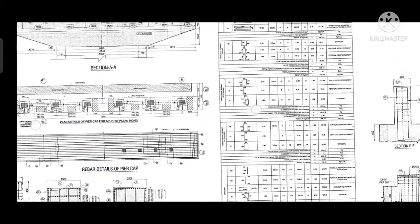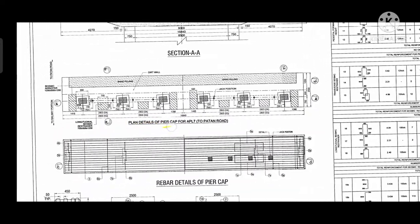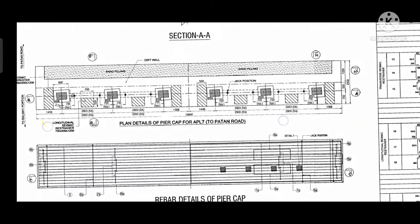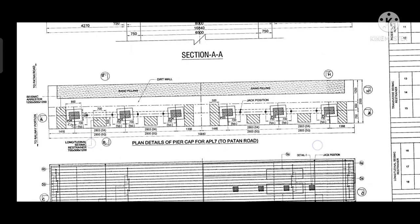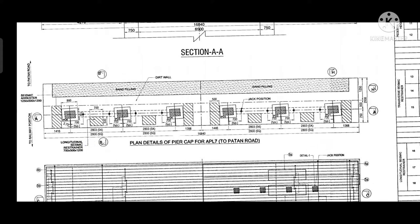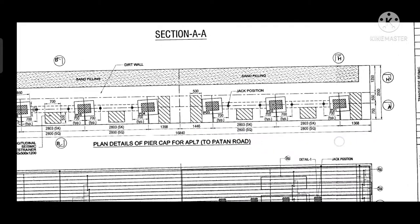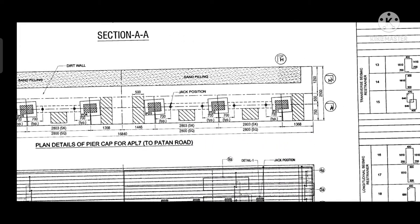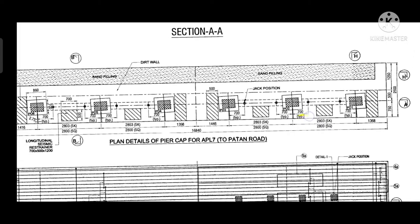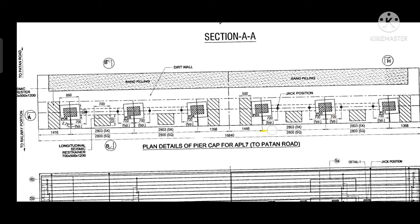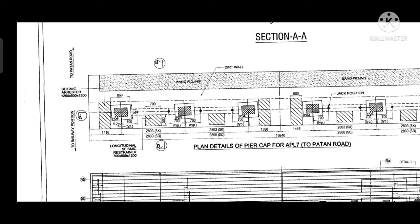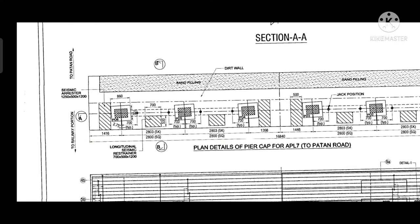First, I'll introduce the drawing. We will show the plan detail of the pier cap for the embankment. These are the pedestals, numbered 1 through 6 from right side to left side. In this bridge construction we have six gutters between every pier. The total length of the pier cap is 16.814 meters.